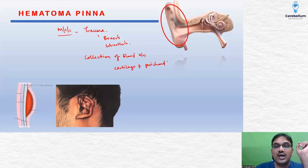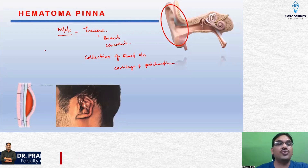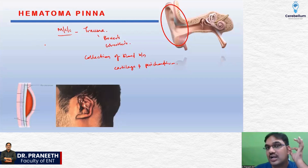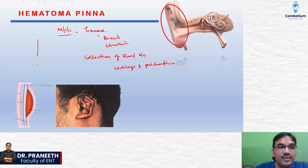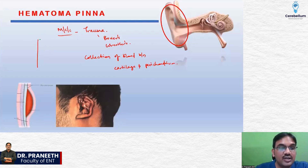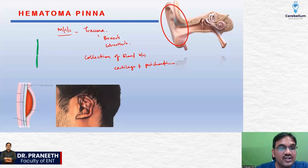To understand this, you first need to know exactly what the pinna comprises of. In the center there will be a cartilage piece. If you take the pinna, right in the middle there will be cartilage — I am denoting it in green color. This is your cartilage.